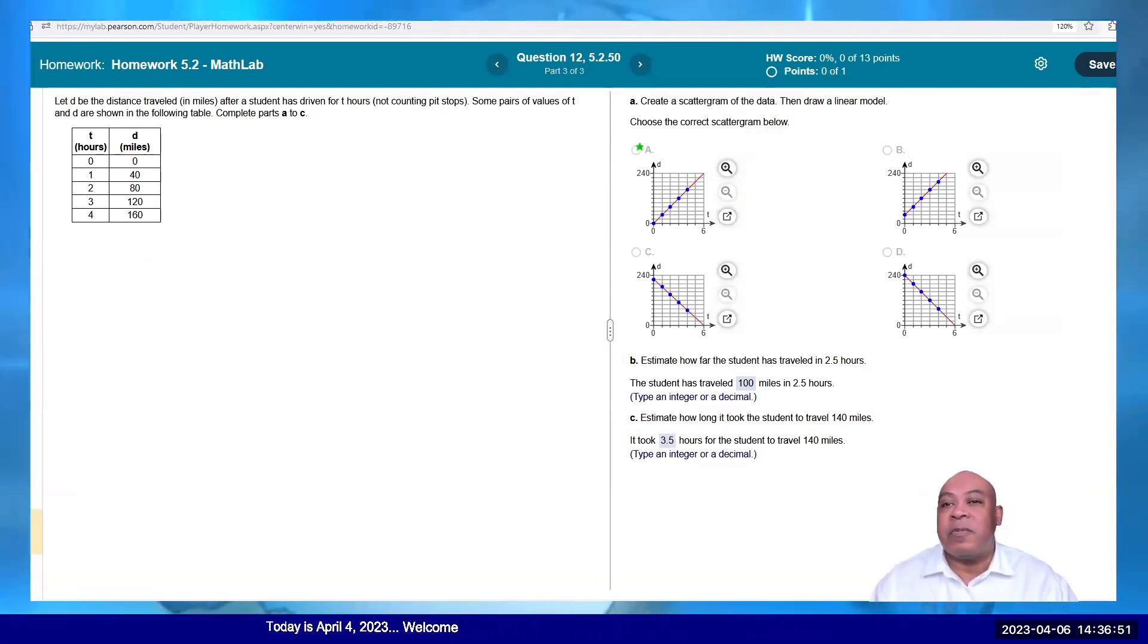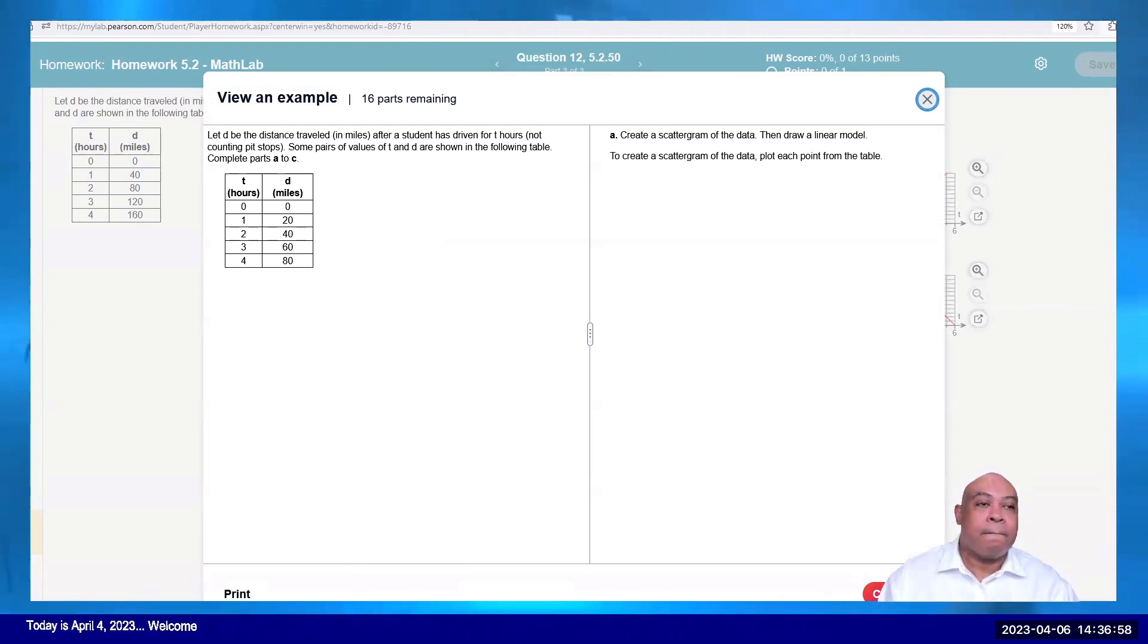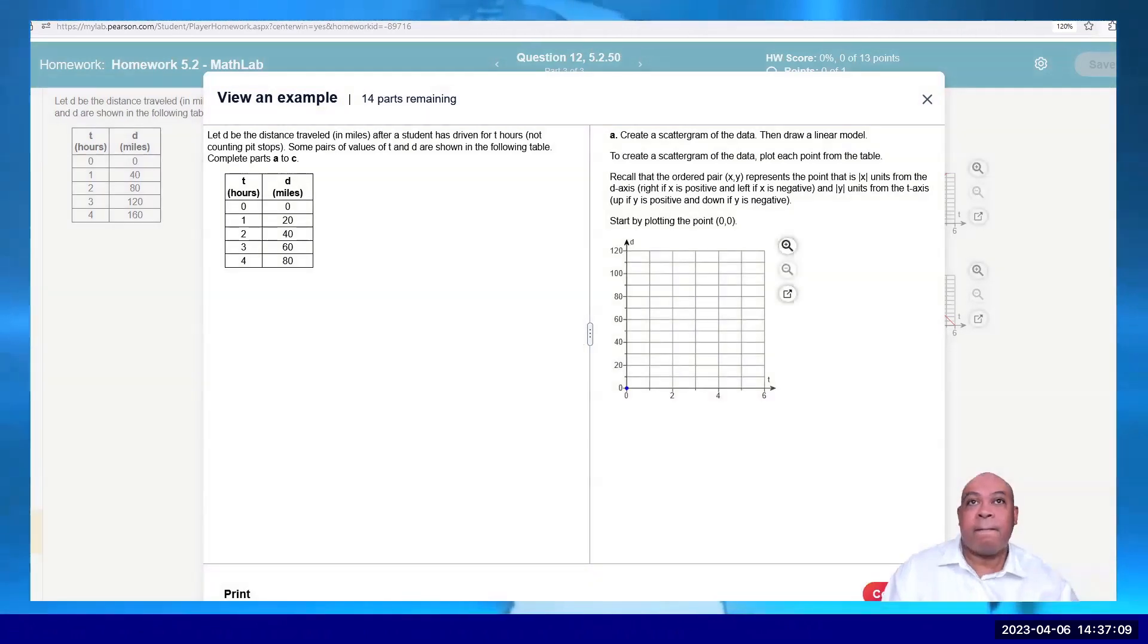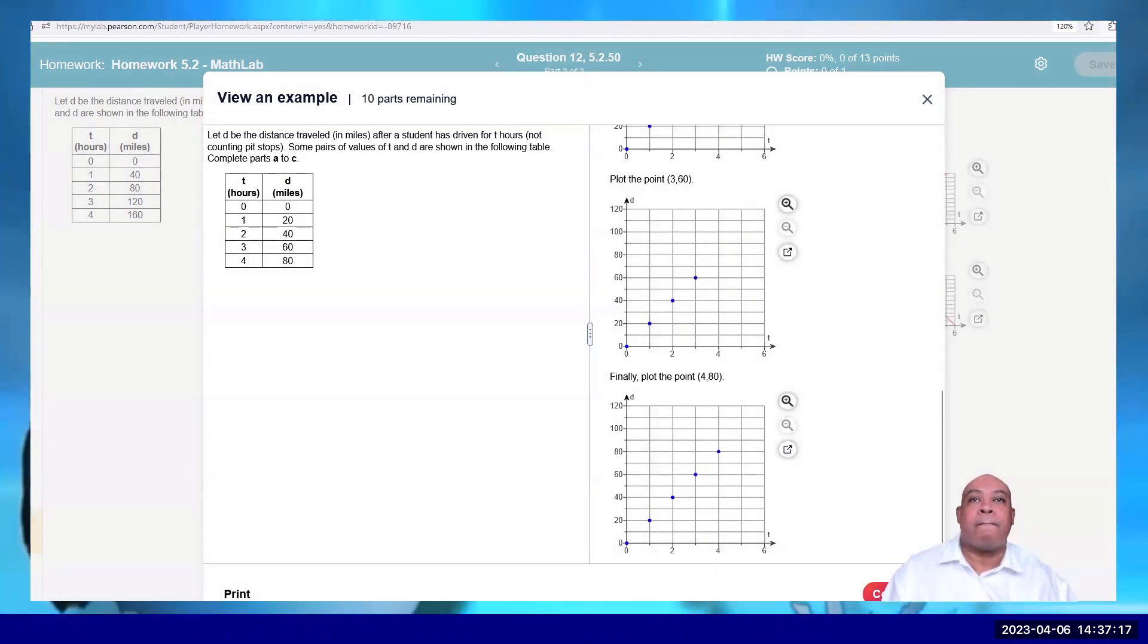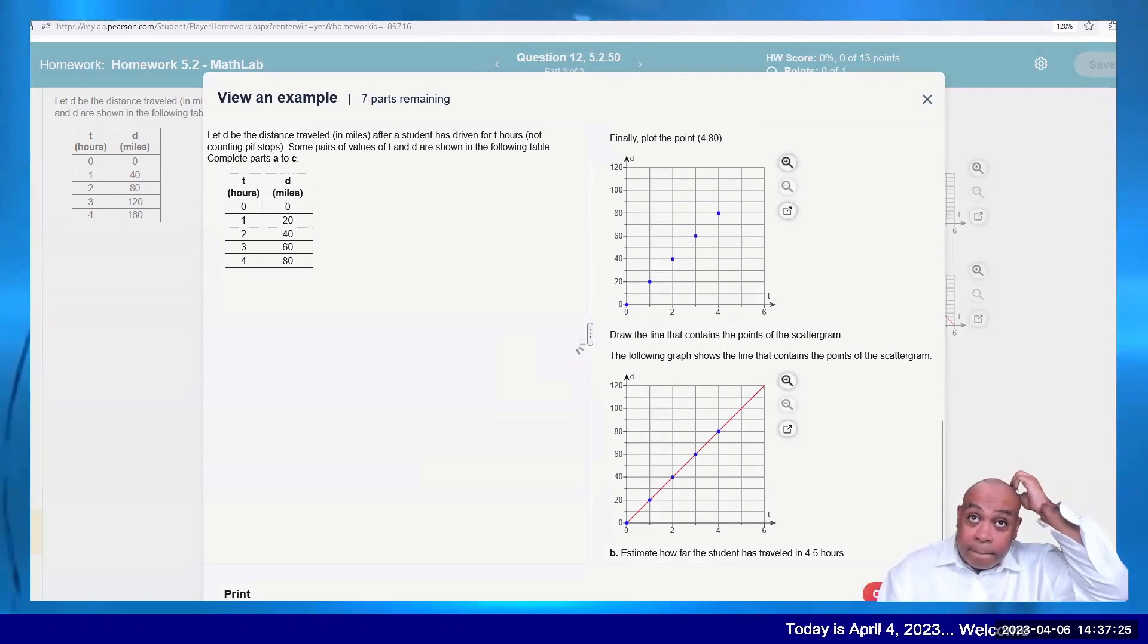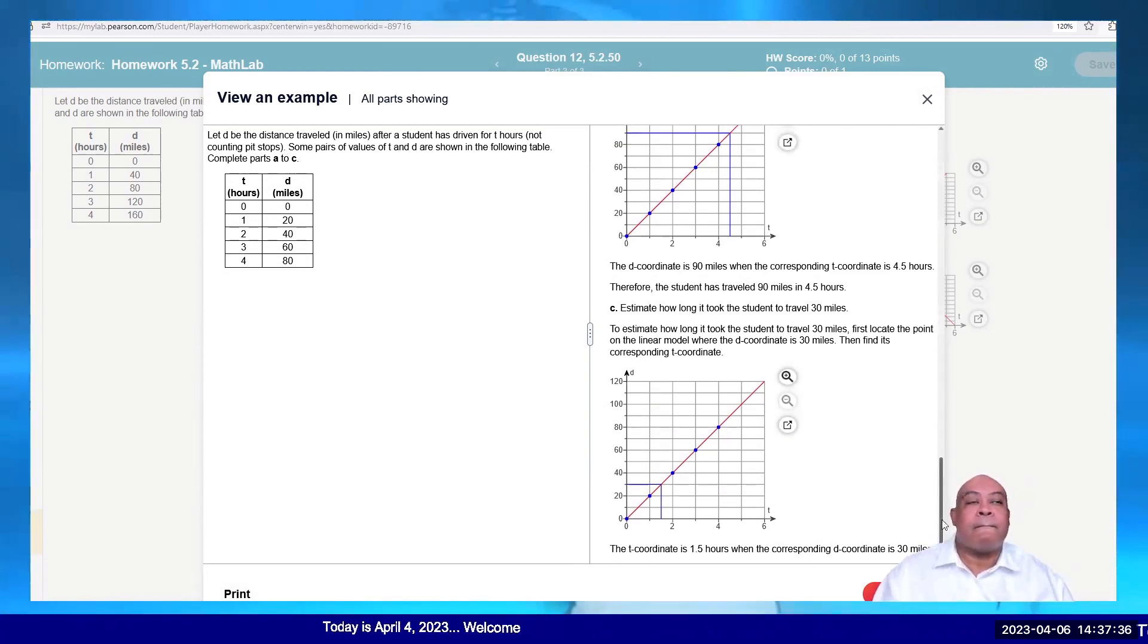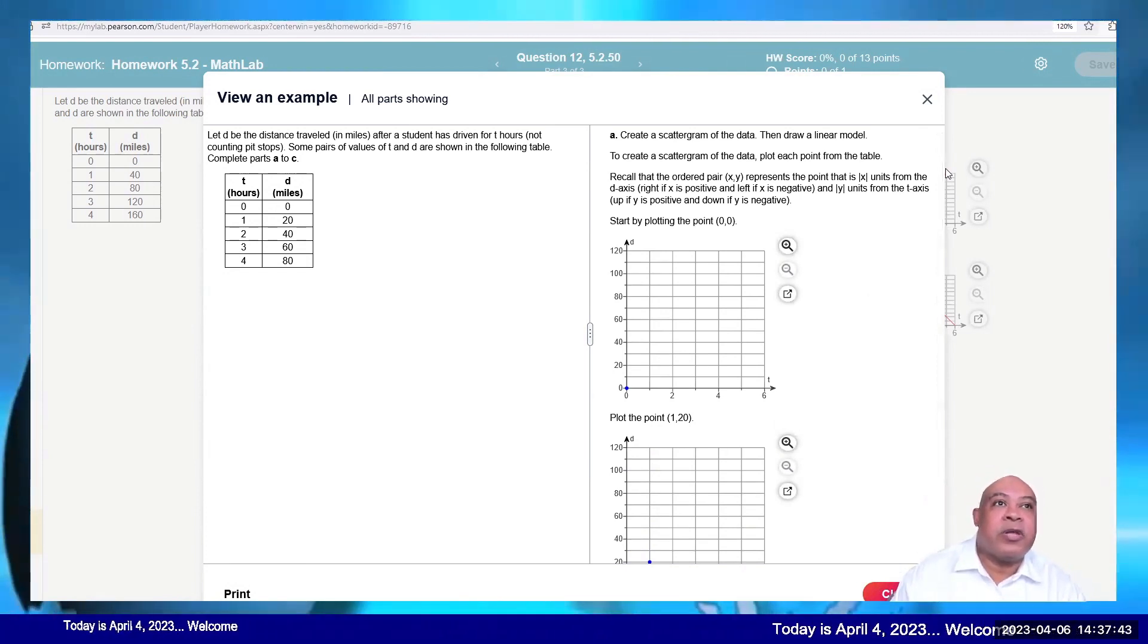Okay, so this one here. Let's see if you've got an example. Let's see here. Create a scattergram of the data, then draw a linear model. Okay.